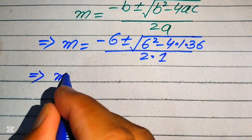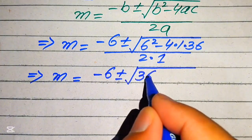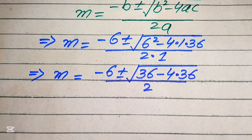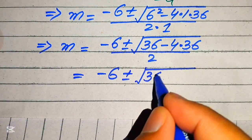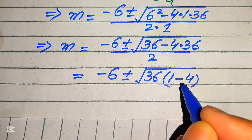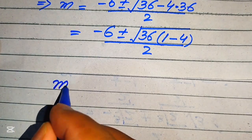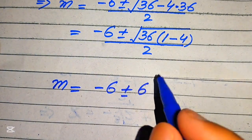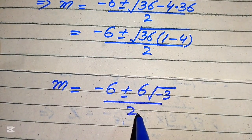After substituting, we have m equals minus 6 plus or minus the square root of 6 squared minus 4 times 1 times 36, divided by 2. This simplifies to minus 6 plus or minus the square root of 36 minus 144, divided by 2. Taking 36 as a common factor inside the square root gives the square root of 36 times (1 minus 4), divided by 2, which is minus 6 plus or minus 6 times the square root of minus 3, all divided by 2.